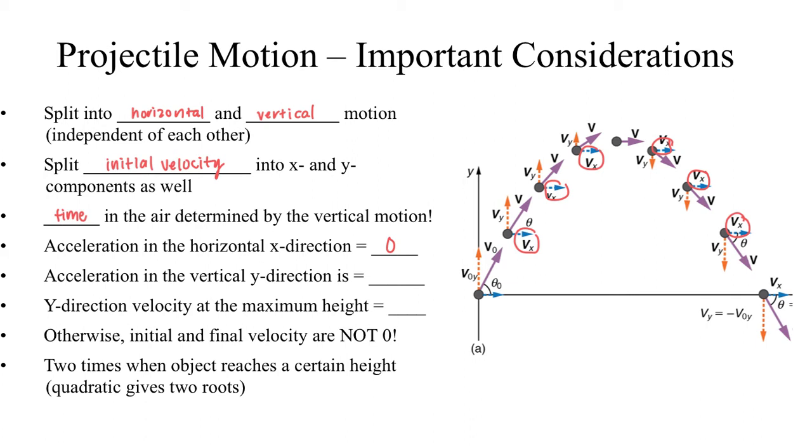And we know the acceleration in the vertical y direction is negative 9.8 meters per second squared. And this explains why a vector launched with some initial positive y velocity will eventually see that velocity decrease until at the maximum height its y velocity is zero. And then on the way back down, that velocity slowly becomes increasingly negative. So we see that negative acceleration represented here on the right.